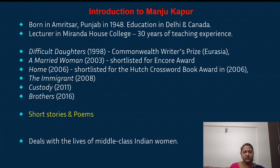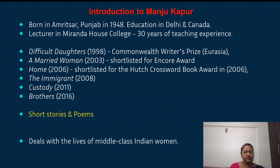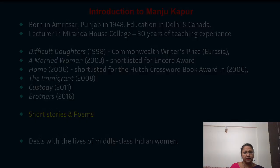She has written six novels. Difficult Daughters was awarded the Commonwealth Writer's Prize. Her second novel, A Married Woman (2003), was shortlisted for the Encore Award. A Home (2006) was shortlisted for the Hutch Cross World Award. The Immigrant came in 2008, followed by Custody, and most recently Brothers in 2016. Apart from novels, she has written short stories and poems, and all her writings deal with the lives of middle-class Indian women.